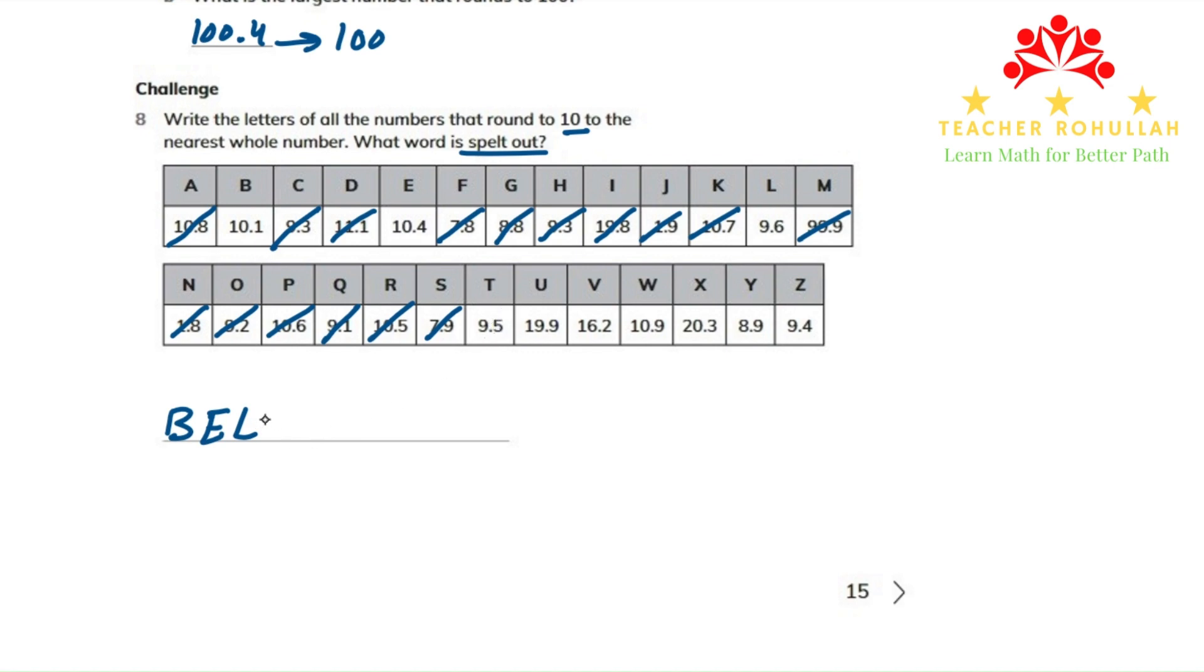So maybe the last one is T. 19.9 rounds to 20. This rounds to 16. This rounds to 11. And this one rounds to 20. This number rounds to 9. And the last one also rounds to 9. So the word that we found is BELT.